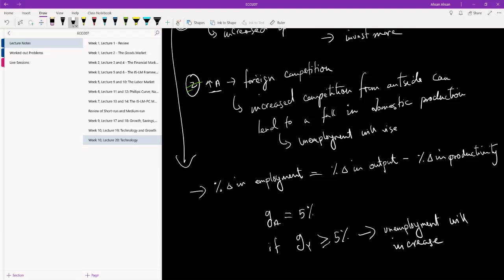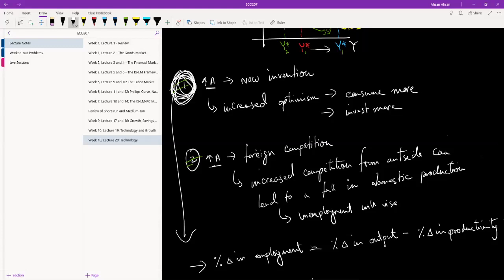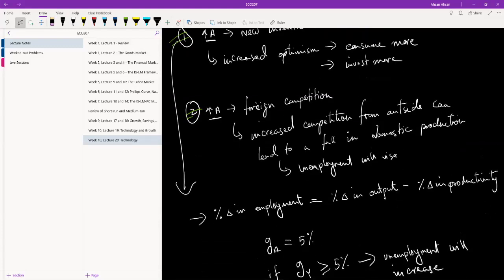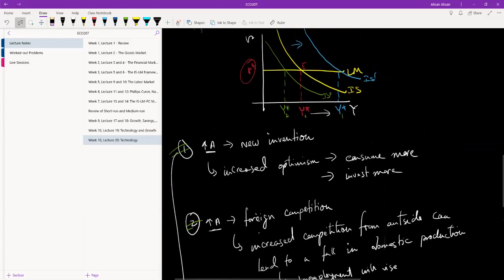Suppose this rise in productivity, remember in the last chapter we call this gA, gA is 5%. So effectively there has been an increased technological progress of 5%. Then as a result, even in this good case, what we are seeing is that output is increasing, that's true. But if increase in output is not at least 5%, then what this equation tells us is unemployment will increase. For example, 5% technological progress leading to increase in output, that's good. But output only increases by 3%, so employment will fall by 2%.